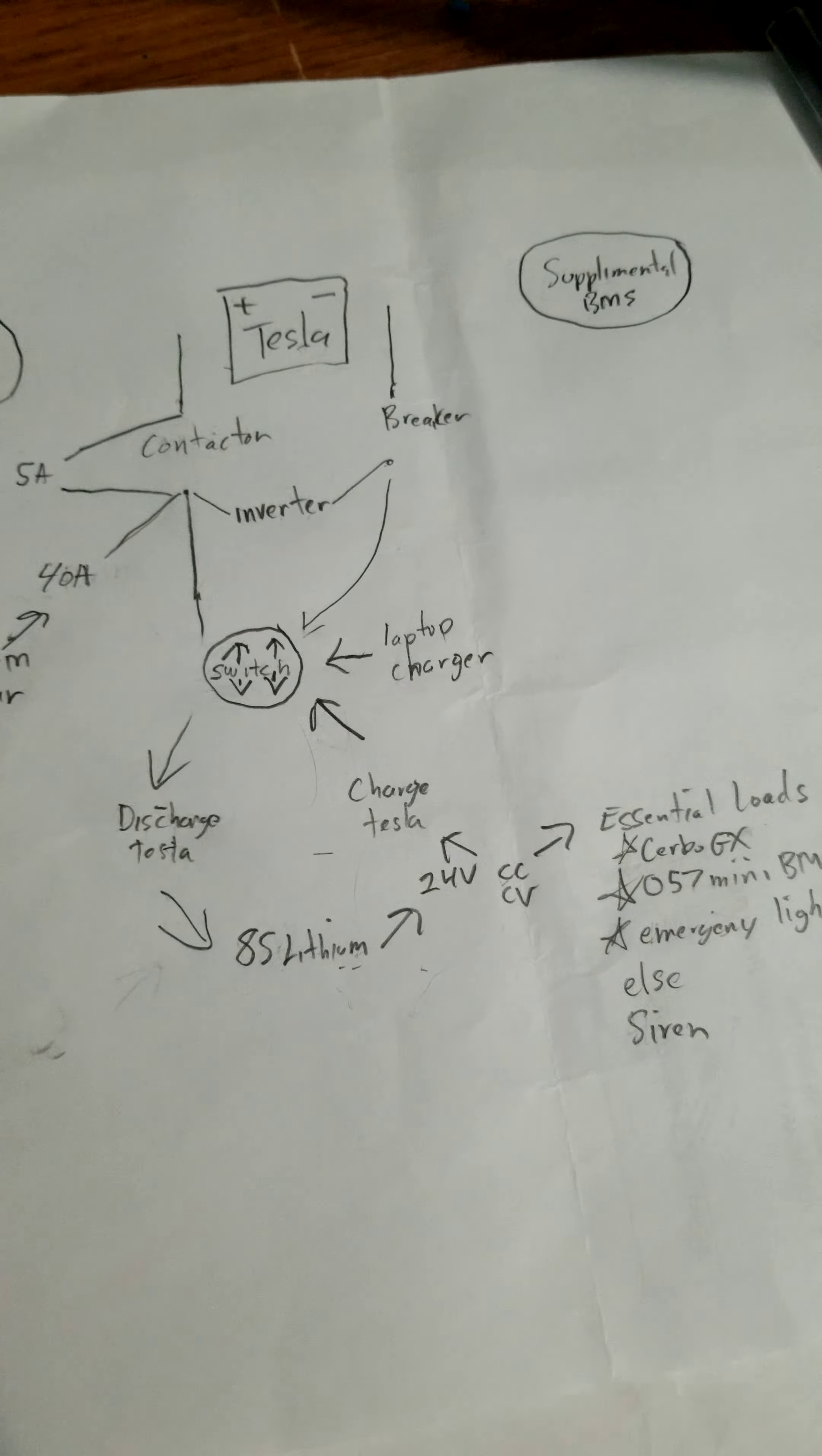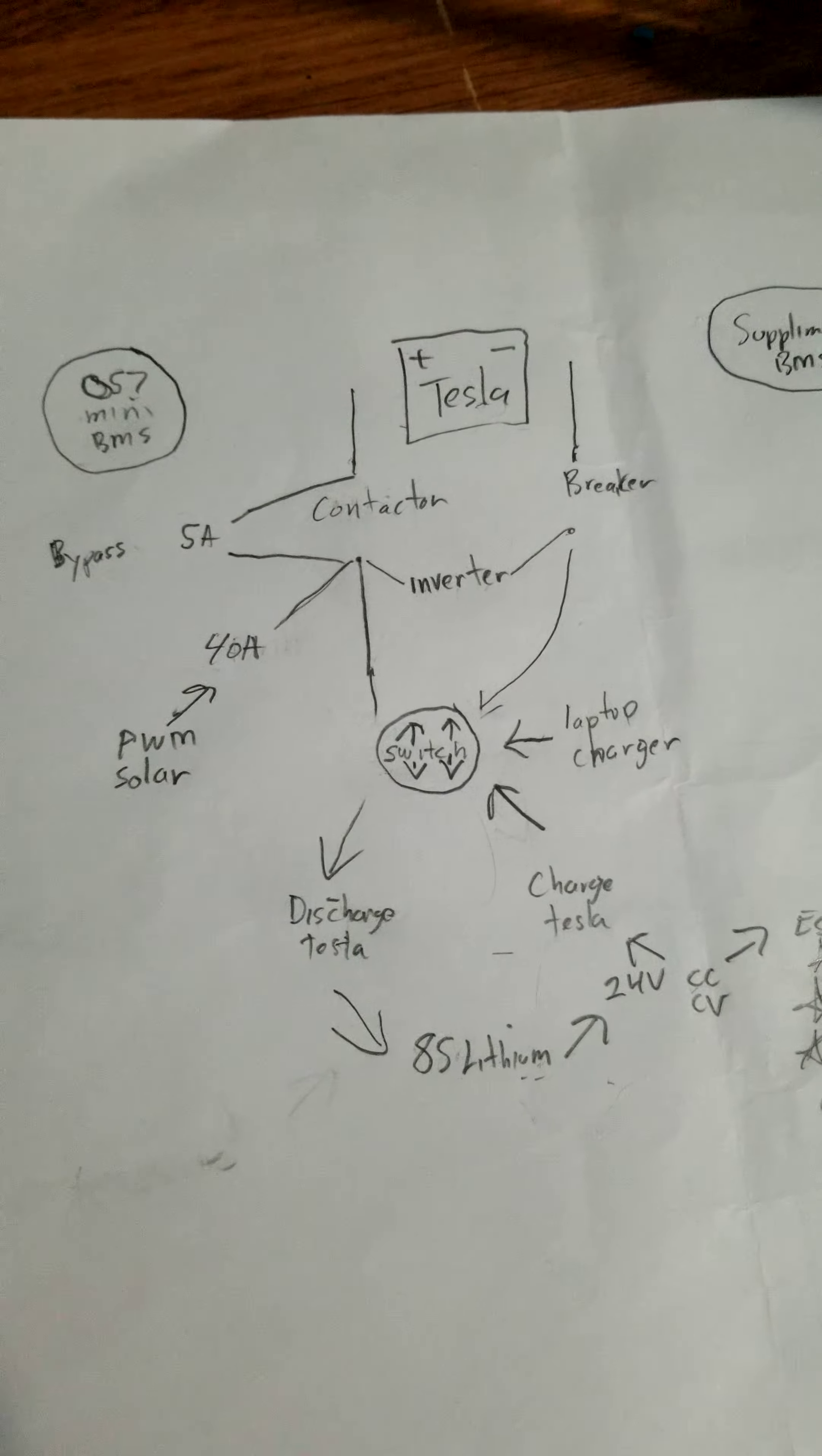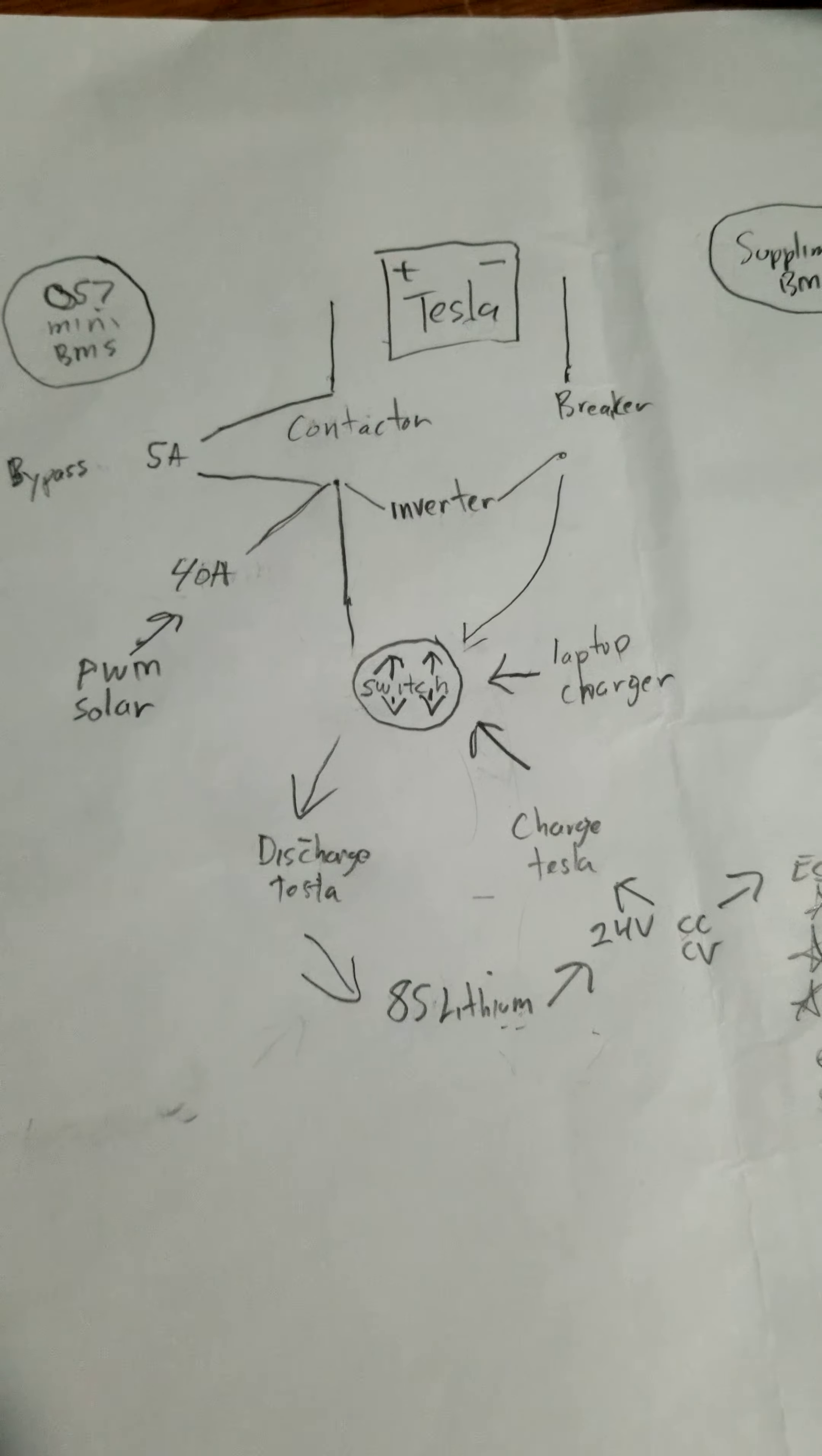And also if the cells are unbalanced it allows you to bypass it and actually send some currents into there or send some discharge current so that you can actually manually have some control over that with a fail safe.